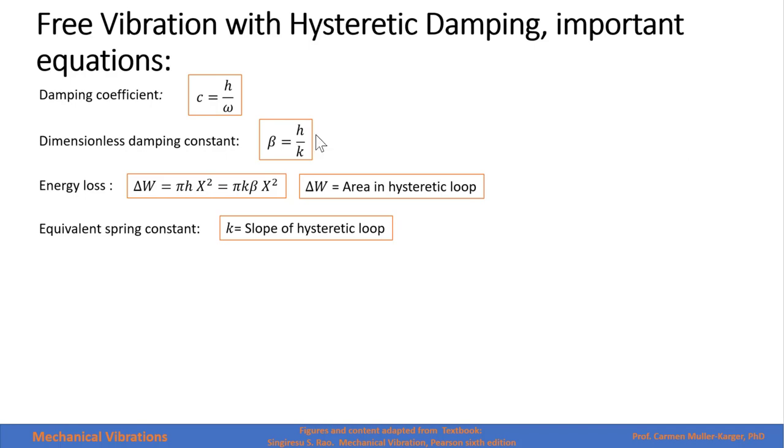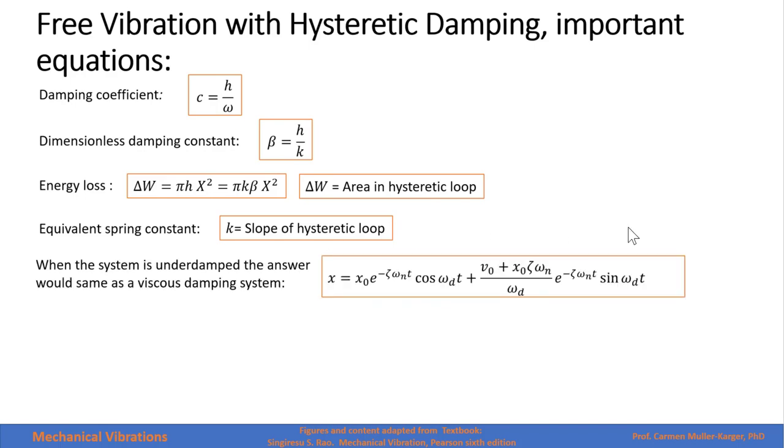We have the equivalent constant spring, k, which is used here too, is the slope of the hysteretic loop.